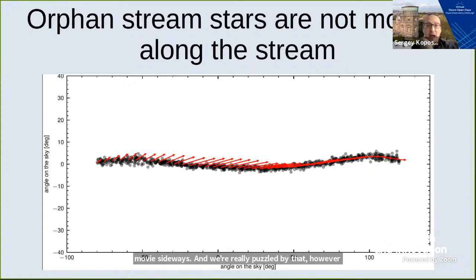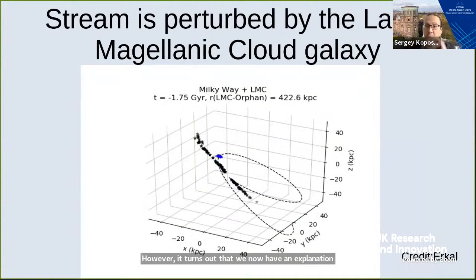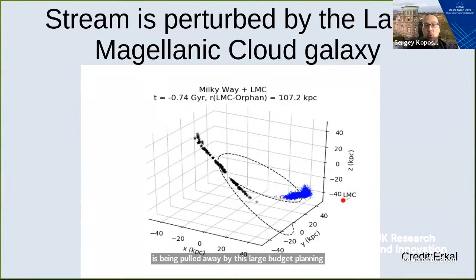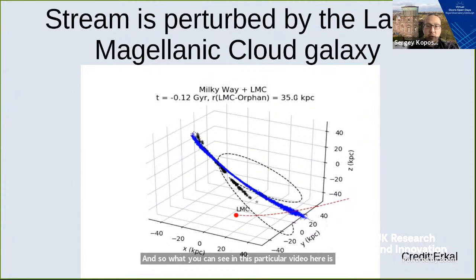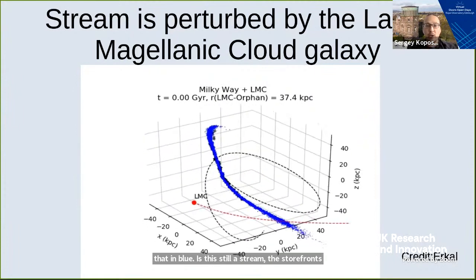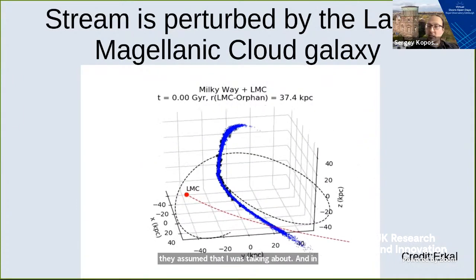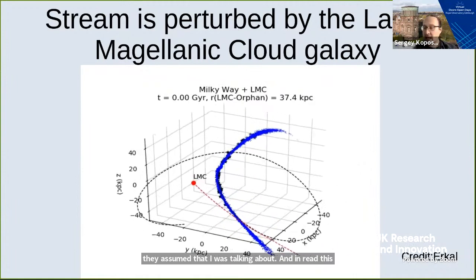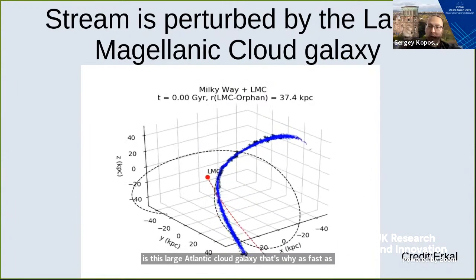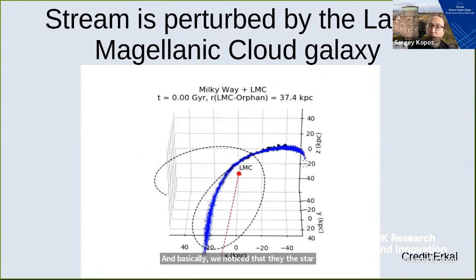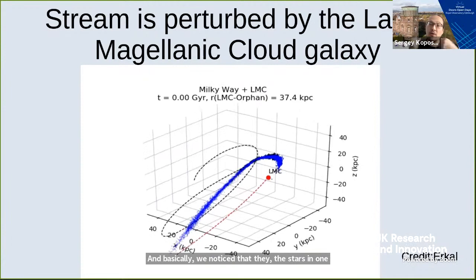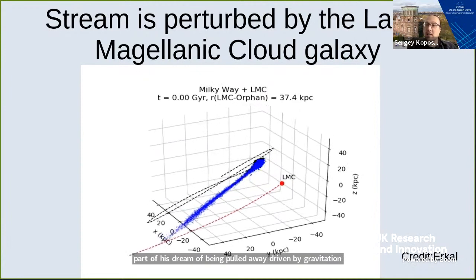It turns out we now have an explanation for why this is happening: the stream is being pulled away by the Large Magellanic Cloud Galaxy that orbits around the Milky Way. In this video, the blue is this orphan stellar stream, and in red is the Large Magellanic Cloud Galaxy that flies past. We notice that the stars in one part of the stream are being pulled away by gravitation from this Large Magellanic Cloud.